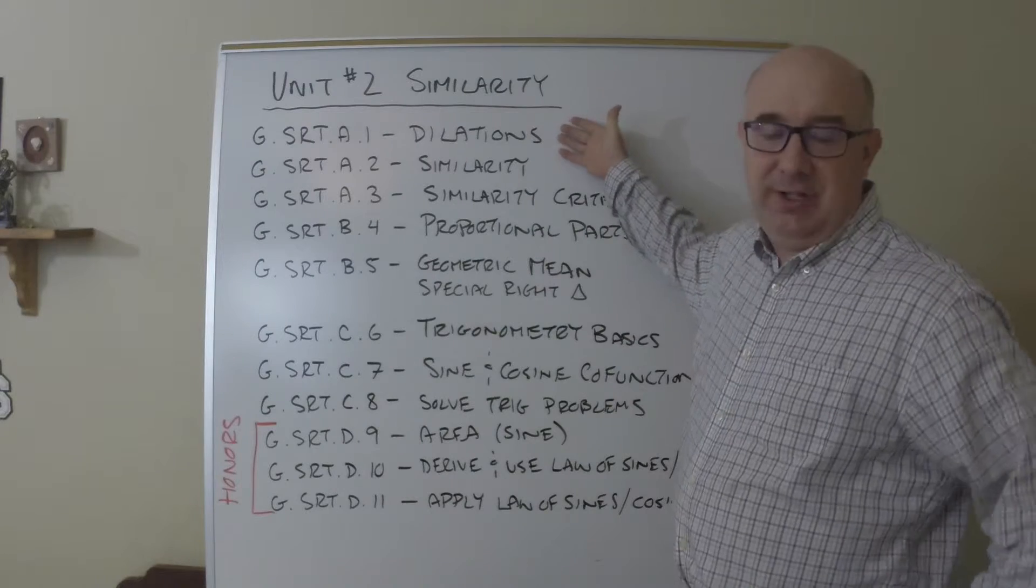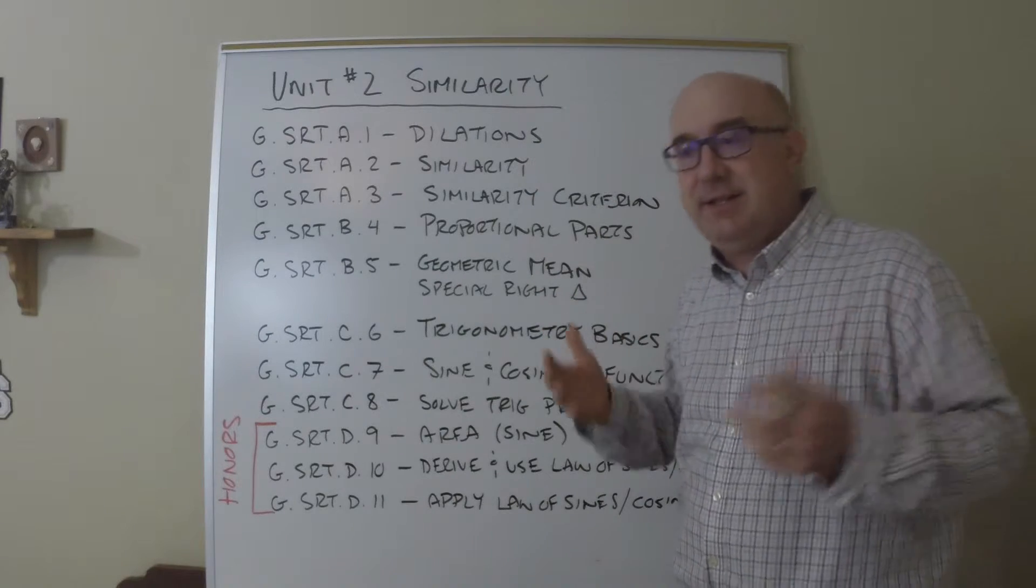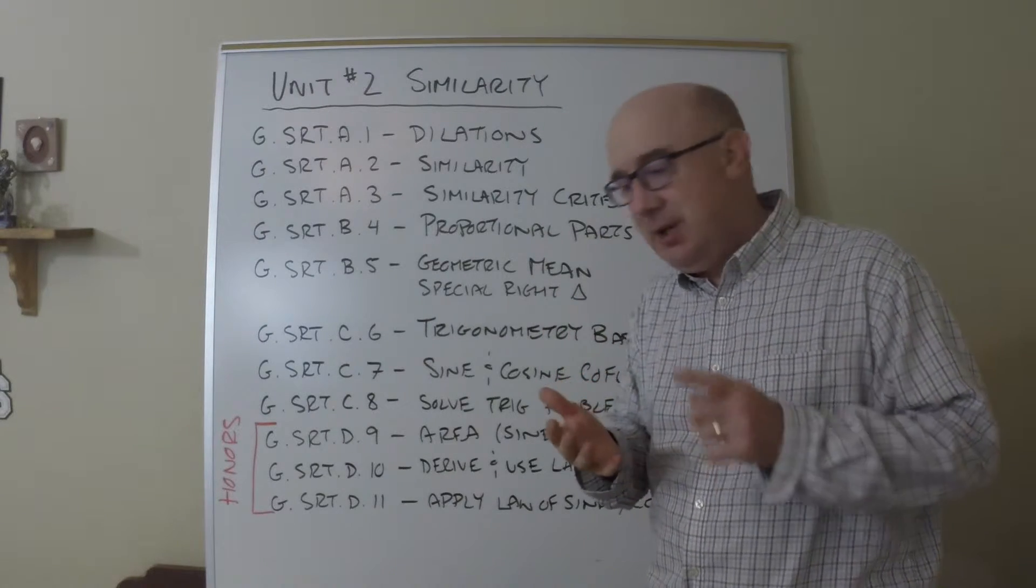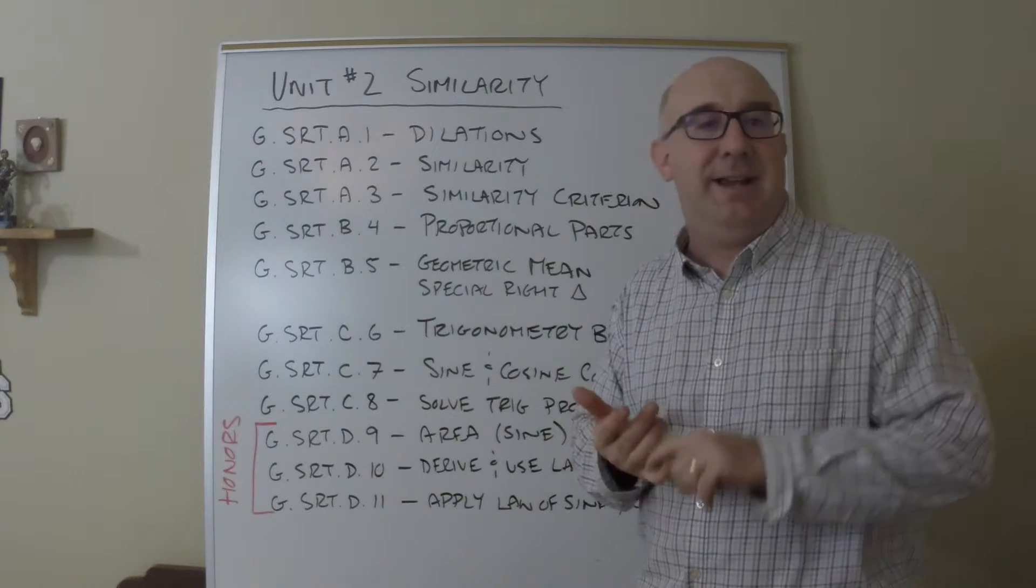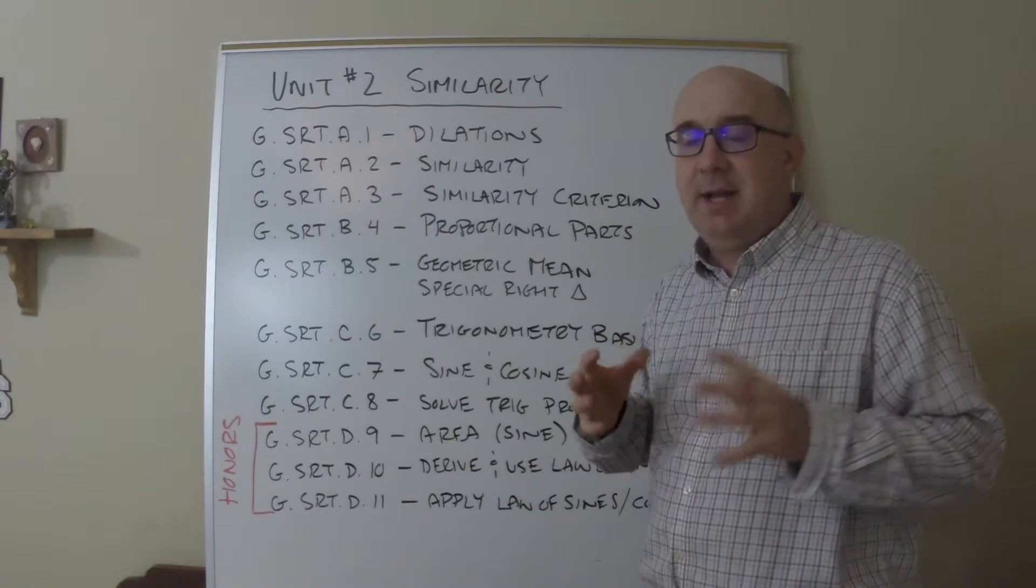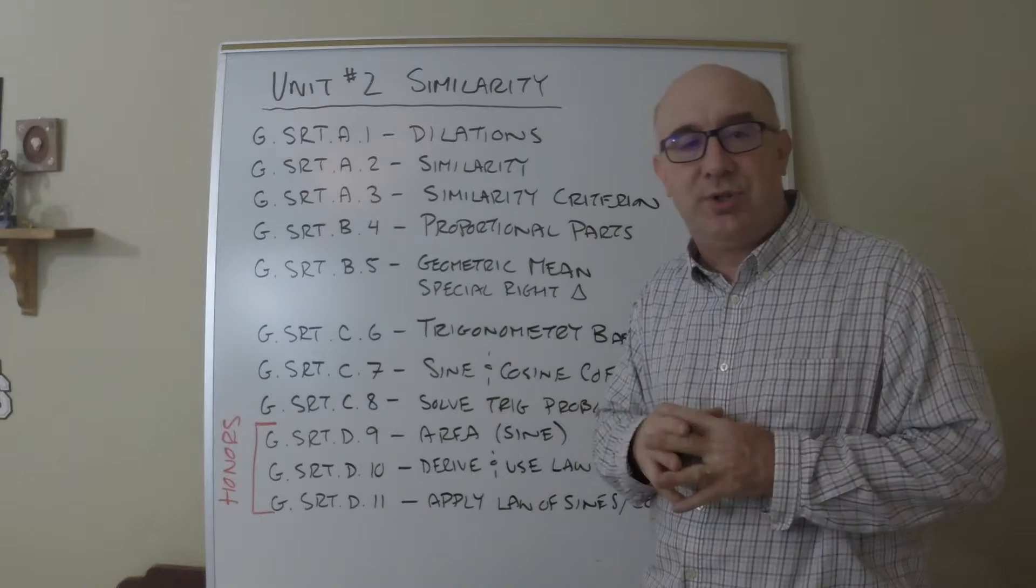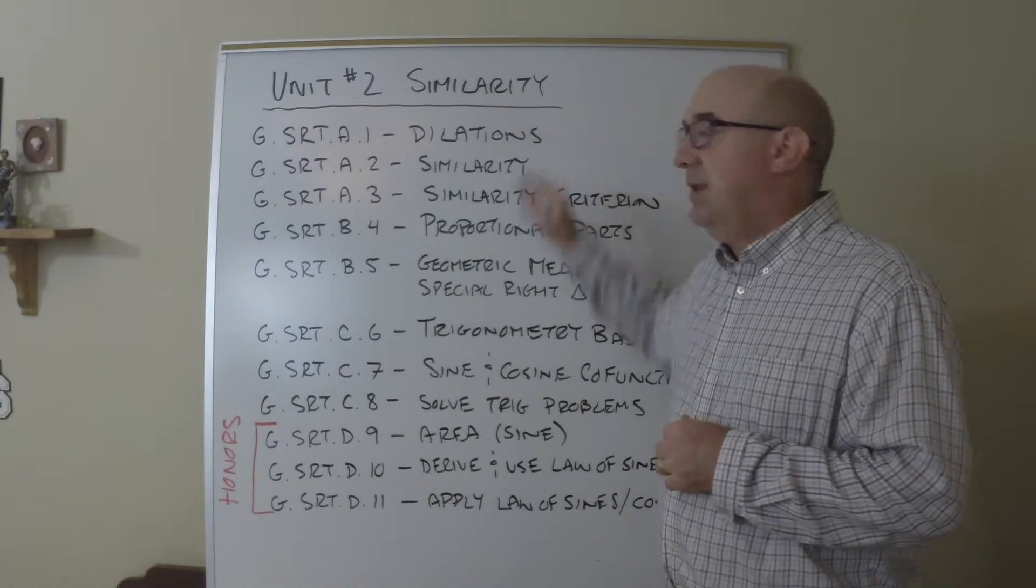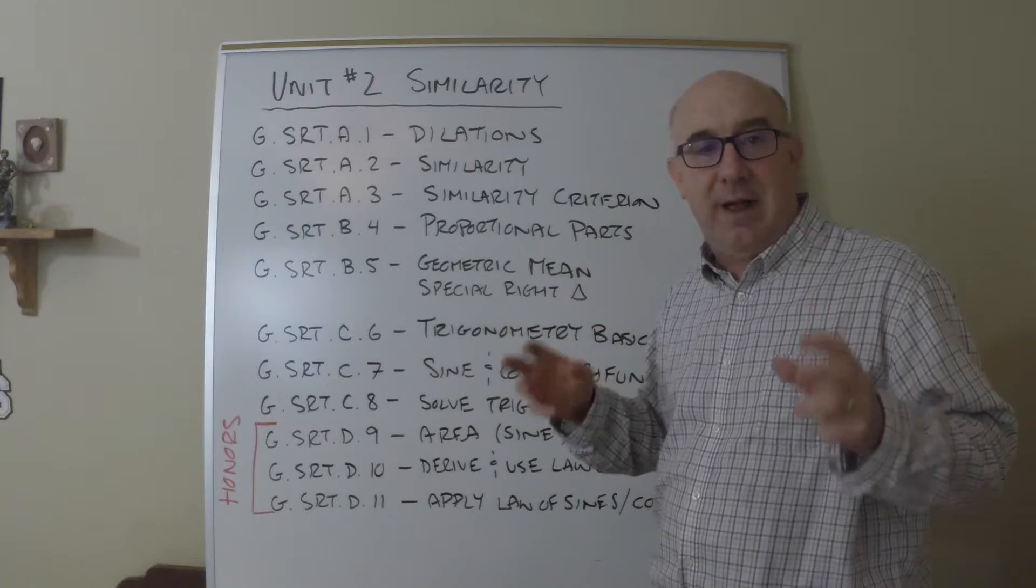As we dilate things, the properties of dilation hold: parallel lines are preserved, angles are fixed, and sides and pieces are proportional. Dilations are a big part of how we set a foundation for similarity.